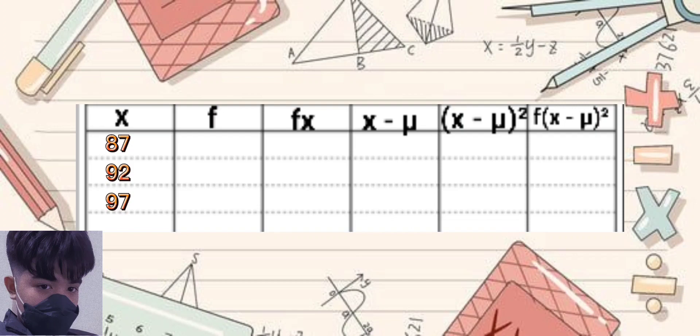And in the second column, we have the F for the frequency. In the third column, we will multiply the second column to the first column. Before proceeding to the fourth column, we will get first the mean.